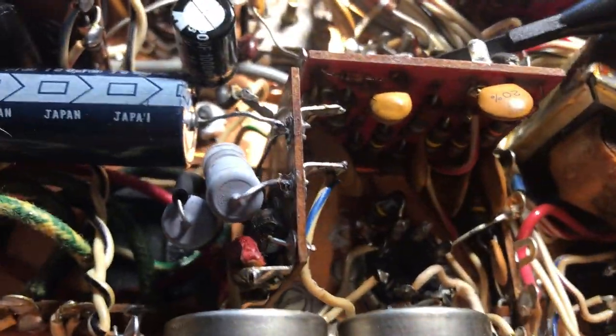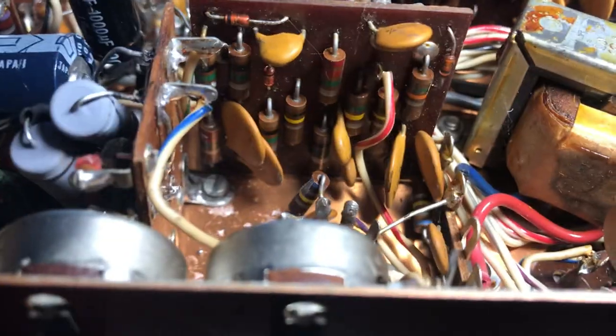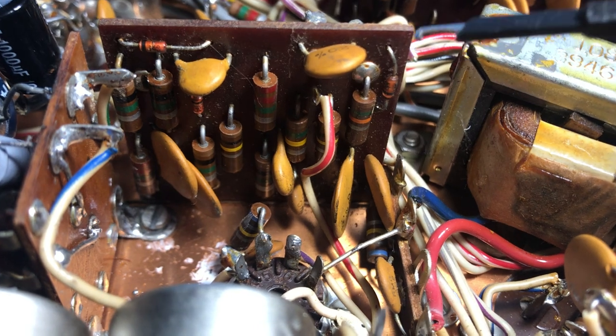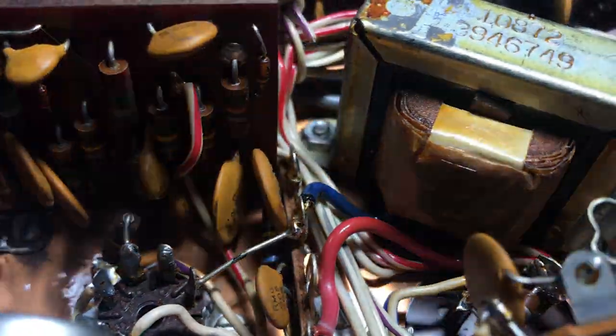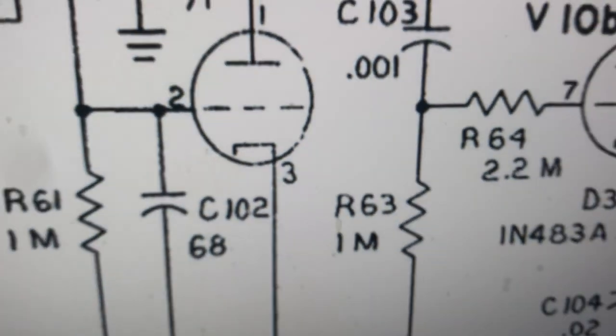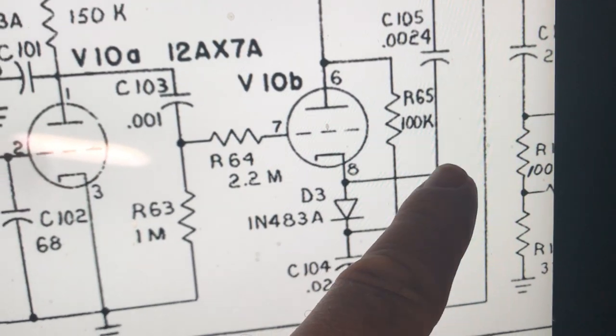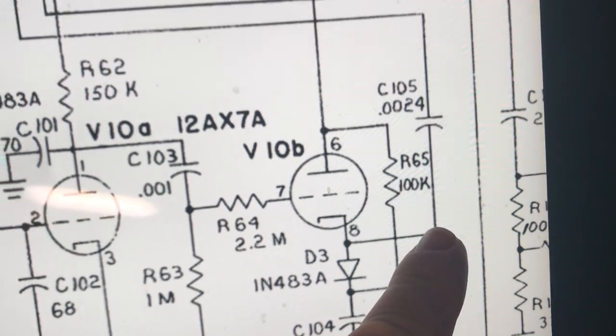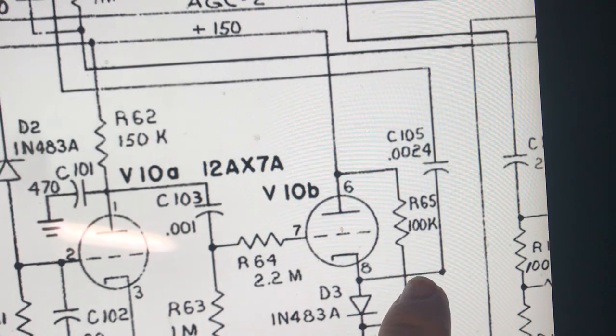Let's take a look now at the diode, and I've been doing this many times now. The noise blanker board diode is right here. If you look at this diode and find it in the schematic, there's the schematic, there's the diode, D3.